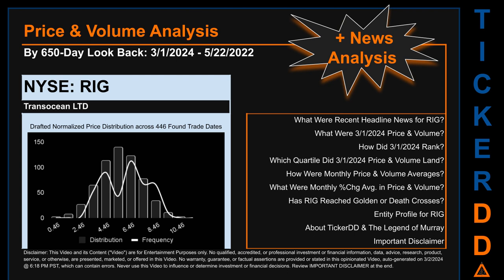Now that we've made our lawyers happy, capitalist brothers and sisters, let's get started. RIG went public on May 28, 1993, which was roughly 30 years and 10 months ago. Looking back 650 calendar days from Friday, March 1st, 2024 to Sunday, May 22, 2022, we found 446 applicable trade dates for use in our analysis. The chart shown is our initial attempt at studying the price for RIG after dynamically normalizing price distribution across those discovered trade dates.